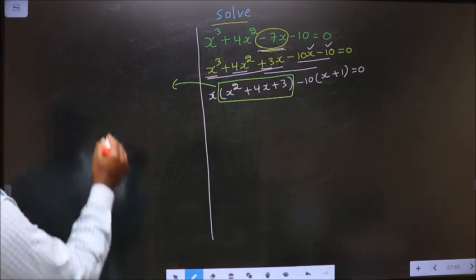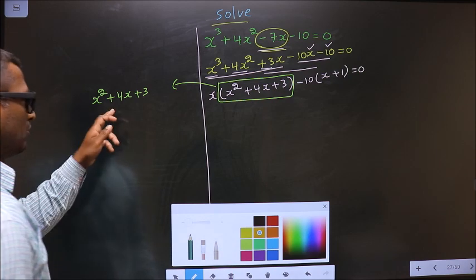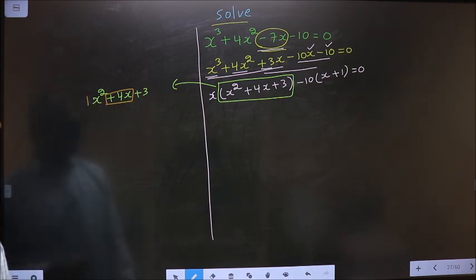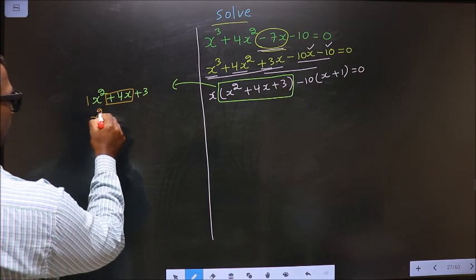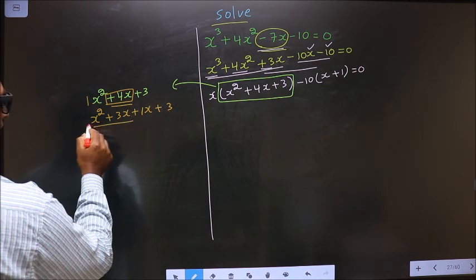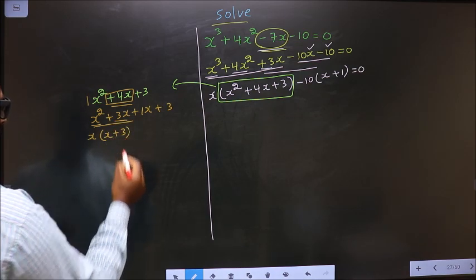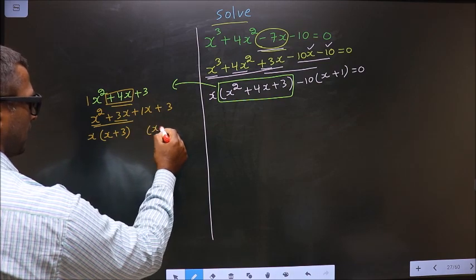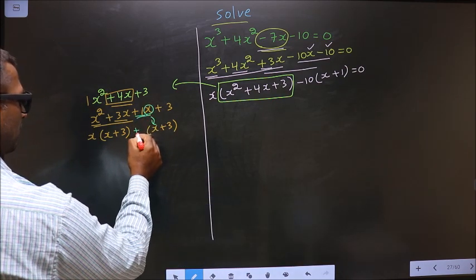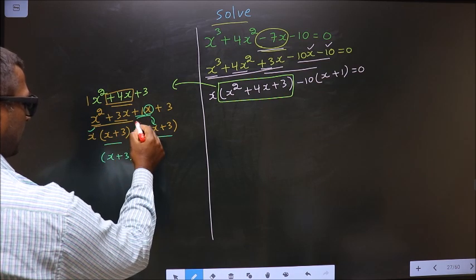The quadratic is x² + 4x + 3. To factorize, we split the middle term 4x: 1 × 3 = 3, and 3 + 1 = 4, so we write +3x + 1x + 3. Taking x common from the first two terms gives x(x + 3), and from the last two terms we get +1(x + 3). So the factored form is (x + 3)(x + 1).